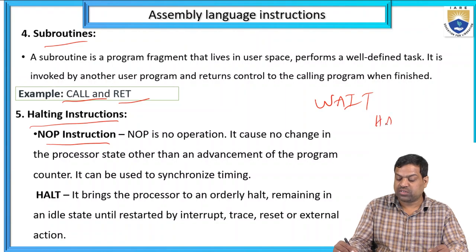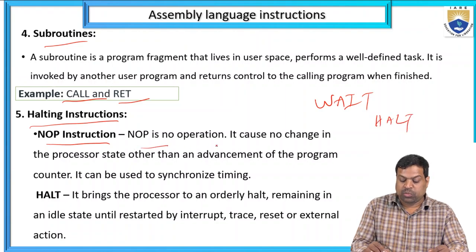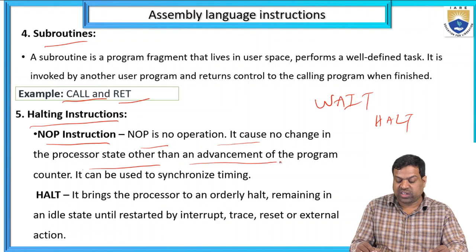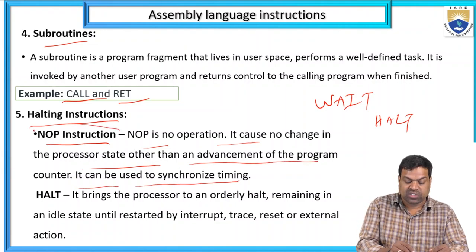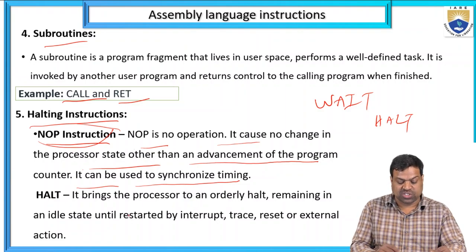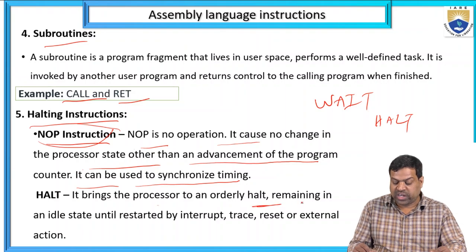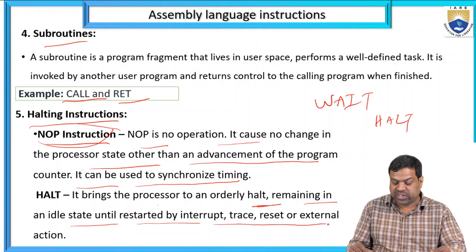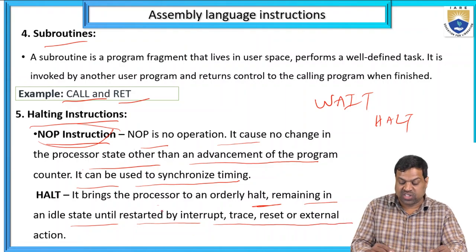Halting instruction means we have to stay or wait sometime. NOP is no operation — it causes no change in the processor state other than advancement of the program counter and can be used for synchronizing timing. NOP means no instruction. HALT means it brings the processor to an orderly halt remaining in an idle state until restarted by interrupt, trace, reset, or external actions.